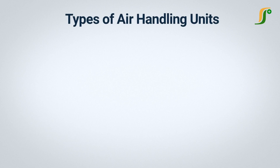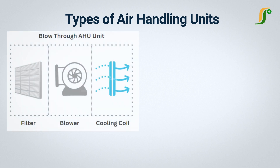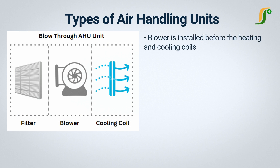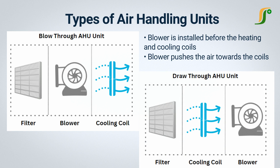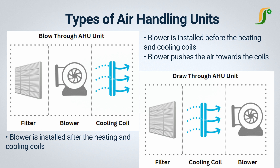Different types of air handling units are available. Each type has its own qualities and features. In a blow-through AHU, a blower is installed before the heating and cooling coils; the blower pushes the air towards the coils, and then air flows to the room through the ducts. In a draw-through AHU, the blower is installed after the heating and cooling coils, where it pulls air from the coils, increasing or decreasing air temperature as per the set temperature.